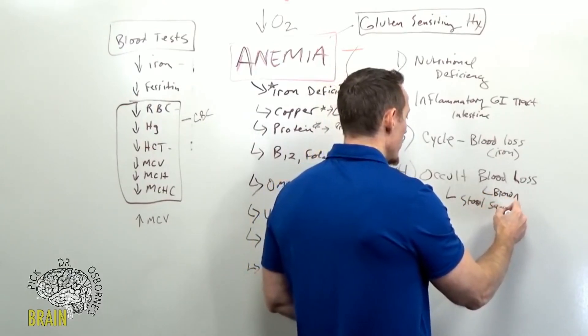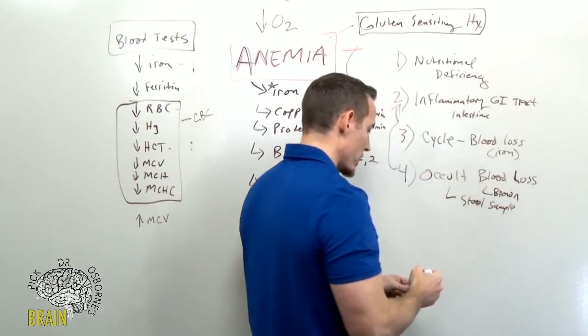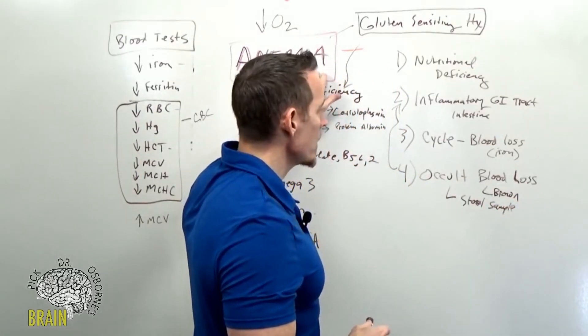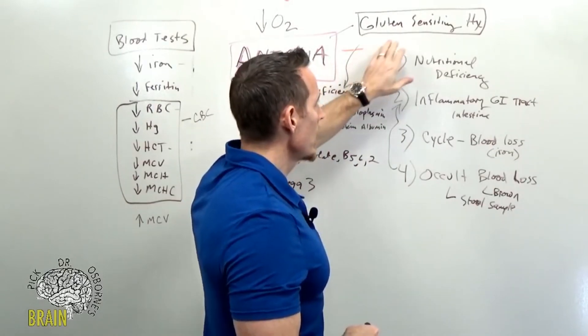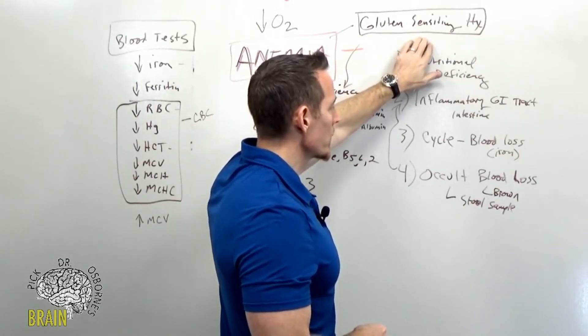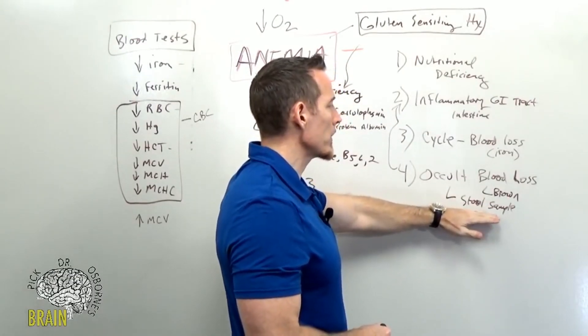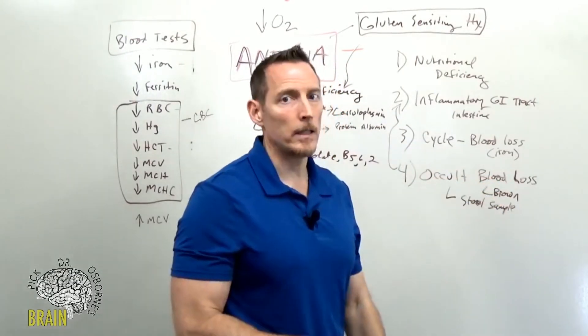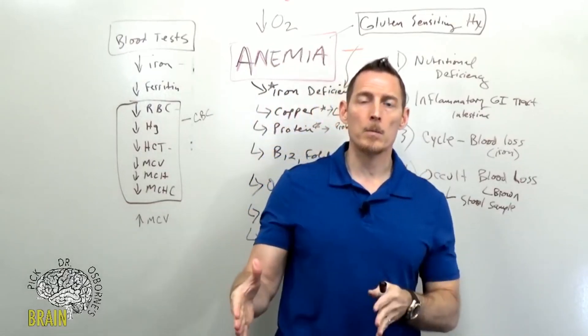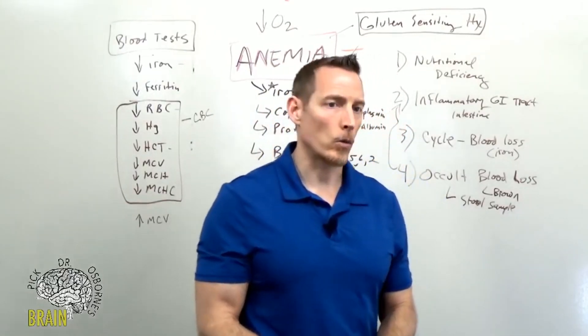If you have chronic iron deficiency anemia and you have for a long time, rule out gluten sensitivity certainly, but also rule out any kind of inflammatory GI problem that might be leading to occult blood loss leading to that kind of ongoing anemia that never really fully corrects.